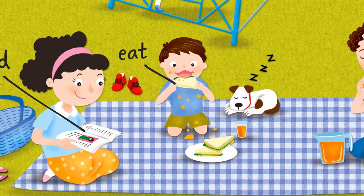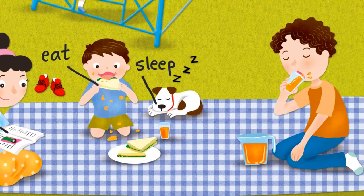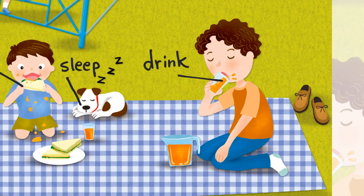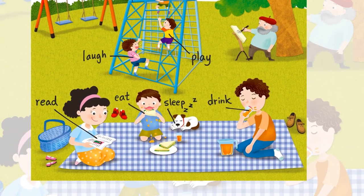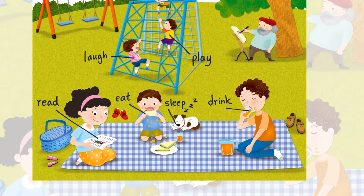Can you see the dog? What is it doing? It is sleeping. Someone is drinking some juice. Who is it? Yes, it's Sam's father. He is drinking some juice. Sam's family is having a good time.